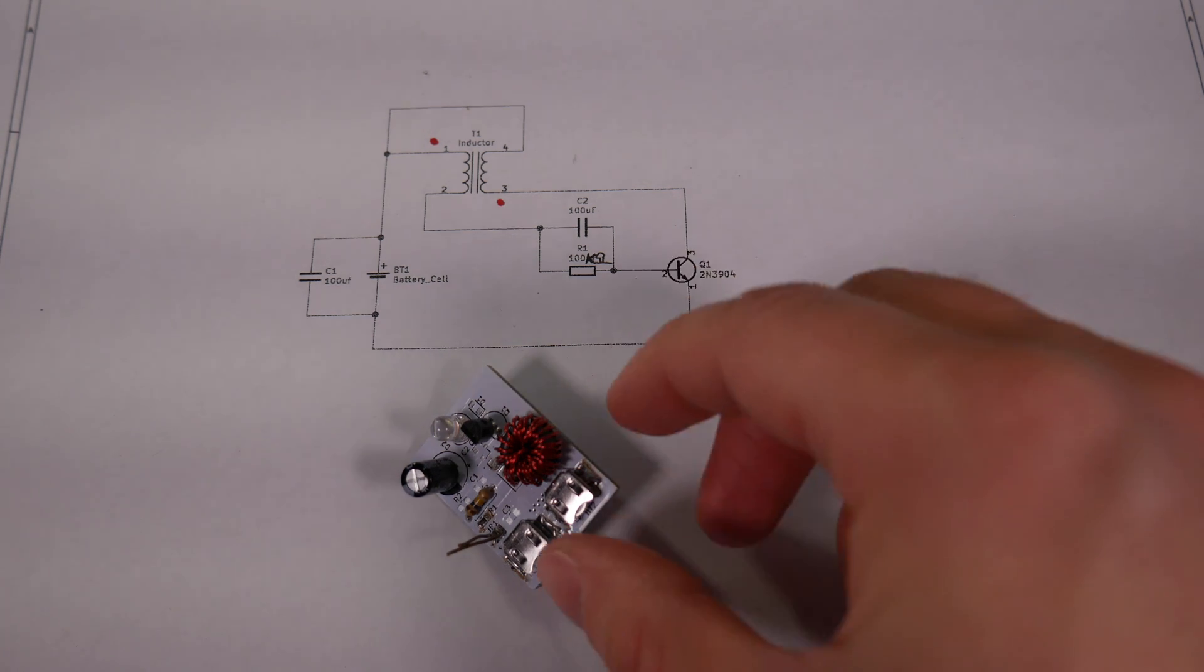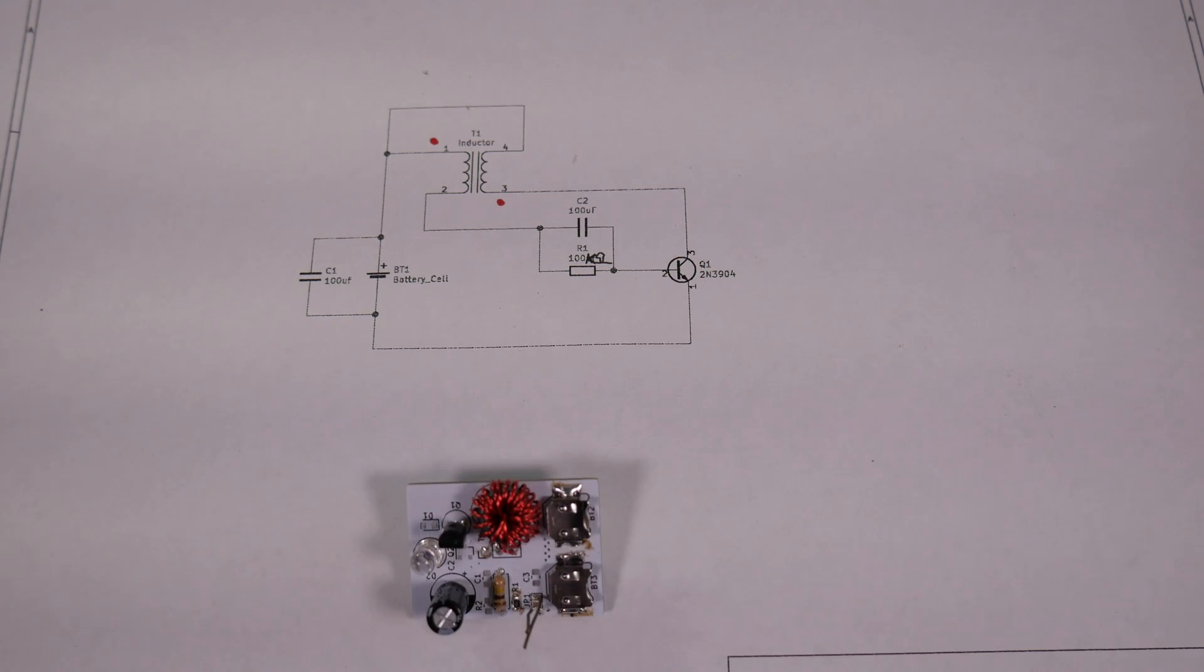In a previous video, I built up this little blinking jewel thief circuit, and I mentioned that I wanted to hook it up to an oscilloscope and probe around and see what exactly is going on in it. So that's what we're going to be doing today.